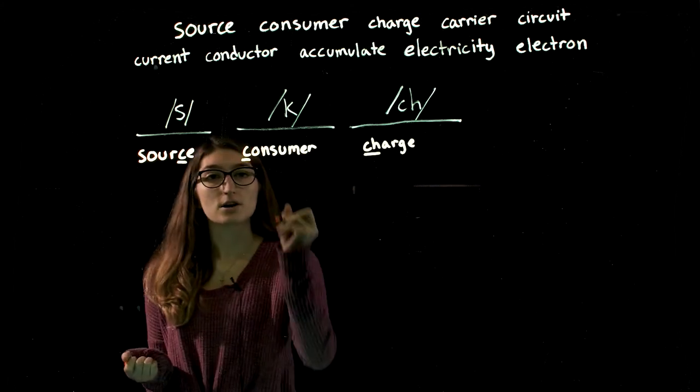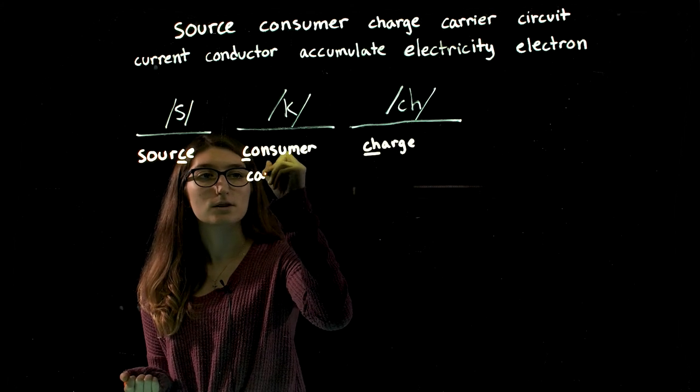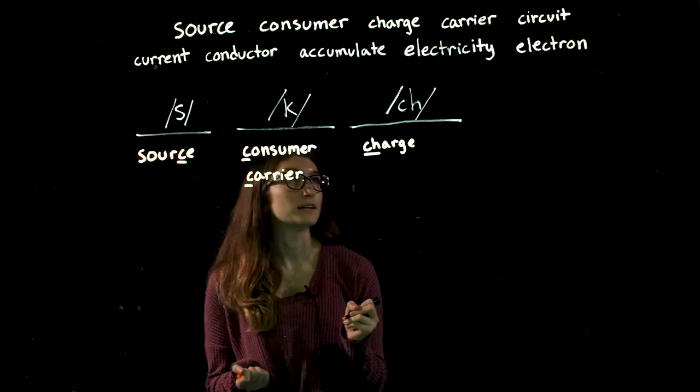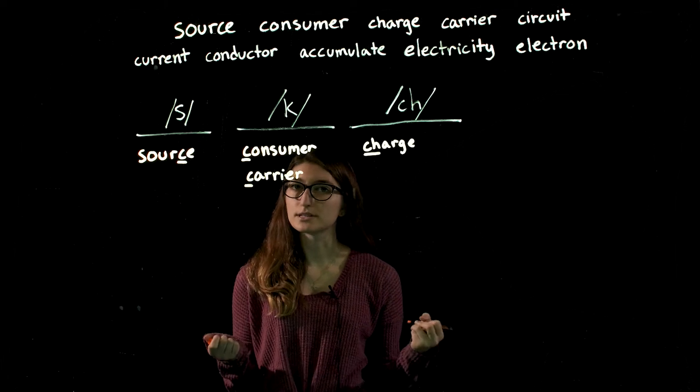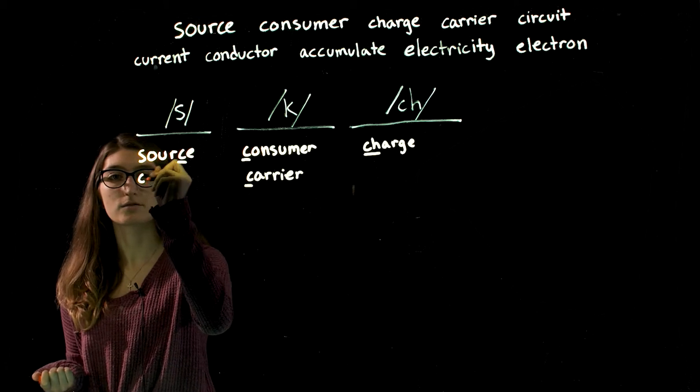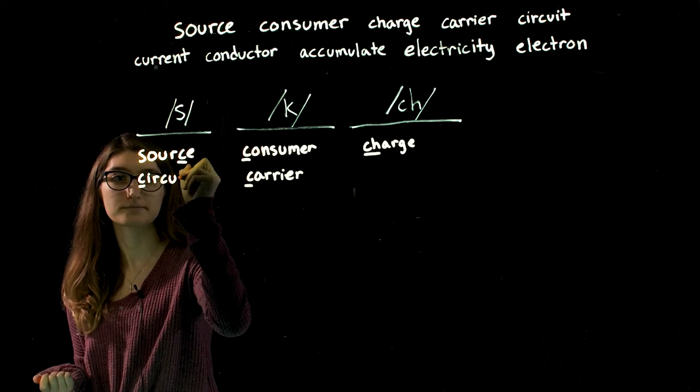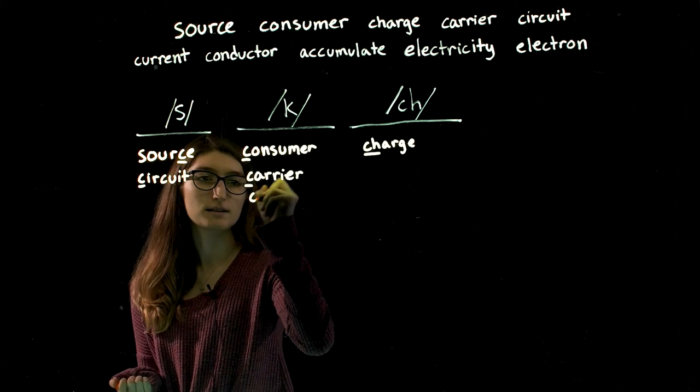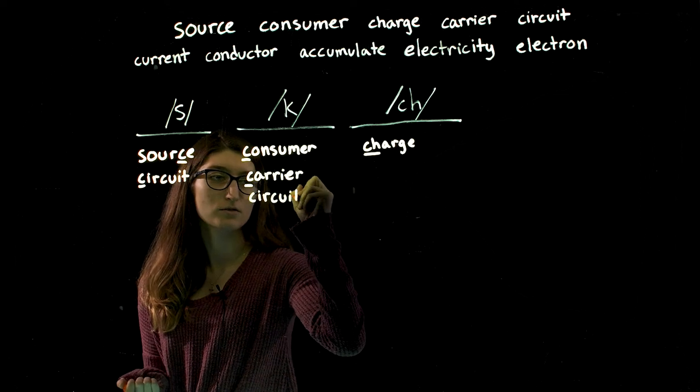Carrier also makes the hard K sound, so this will go here. In circuit, you can hear two different Cs, so first we'll put this in the S column for the first C. And we'll also put it in the second column for the other C.